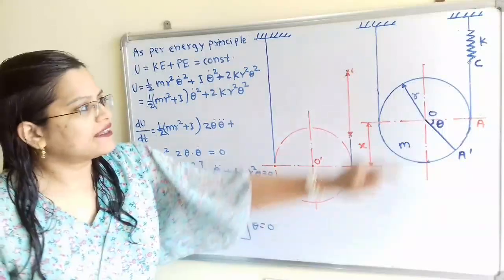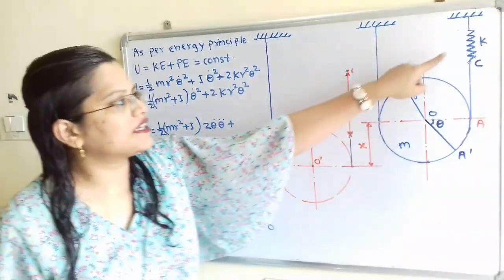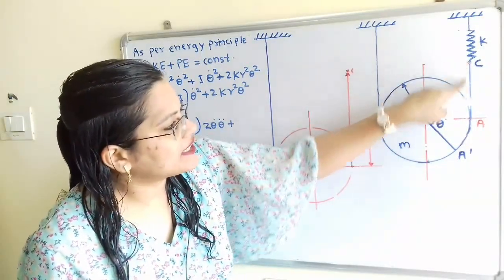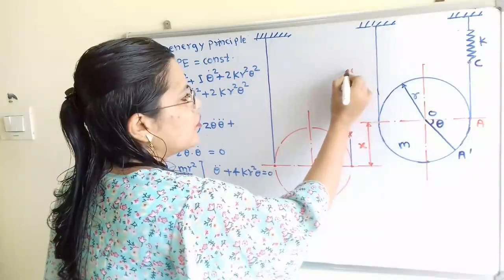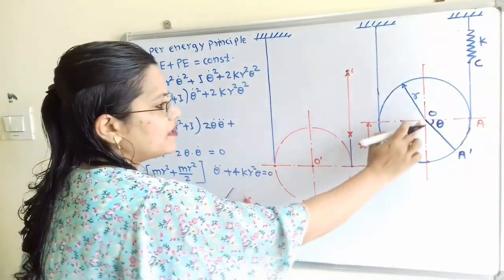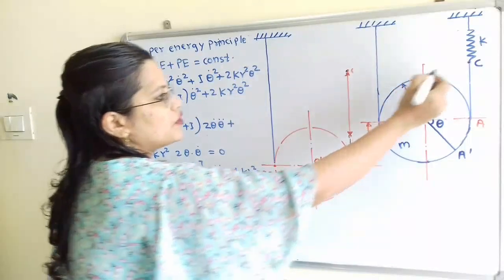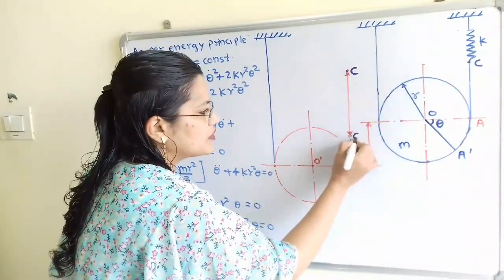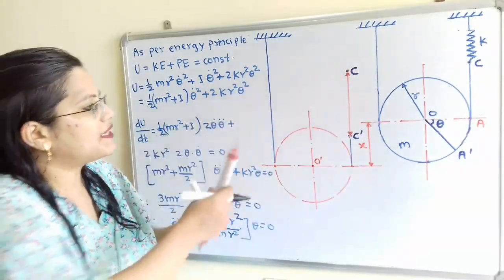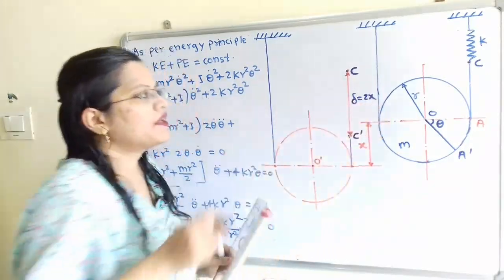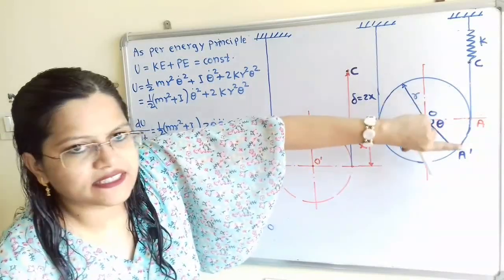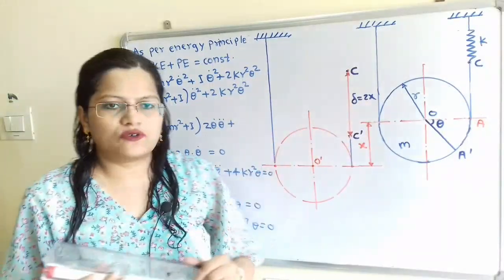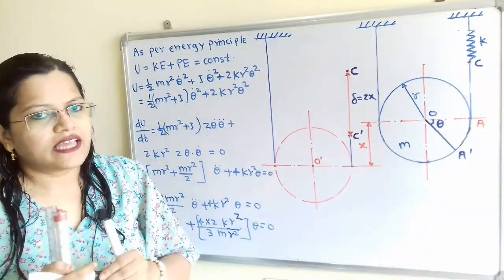One end of the chord is fixed and the other end is connected to the spring. There is a deflection in the spring, which we will consider as delta. We need to find how much point C gets displaced. This is the original position of point C. Because of the spring stretching, the new position of point C is C', and the total displacement delta is equal to 2x. Since one end is fixed and the cylinder rotates along the chord, point C moves to C' by the amount delta equal to 2x.